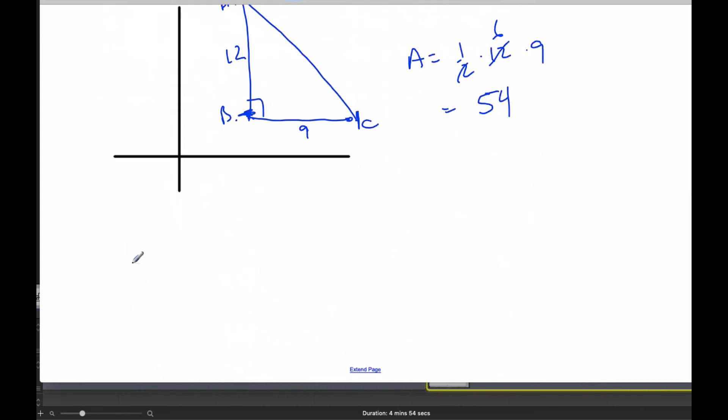Well, the enlargement matrix was 3, 0, 0, 3, and so the determinant of that, this is the notation for the determinant, is going to be 3 times 3 minus 0, so this is the determinant.